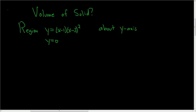In this problem, we're being asked to find the volume of the solid that we get when we rotate this bounded region about the y-axis. Let's come over here and do a preliminary sketch. So this polynomial function has two zeros: 1 and 3.